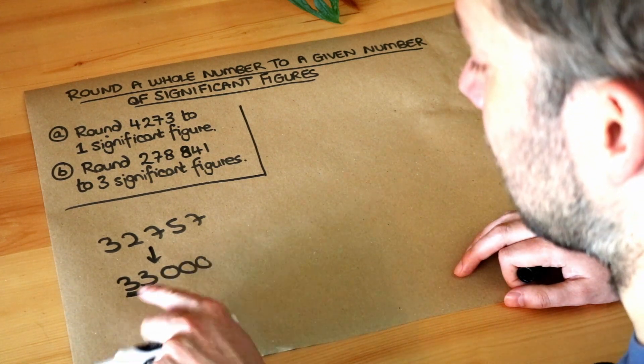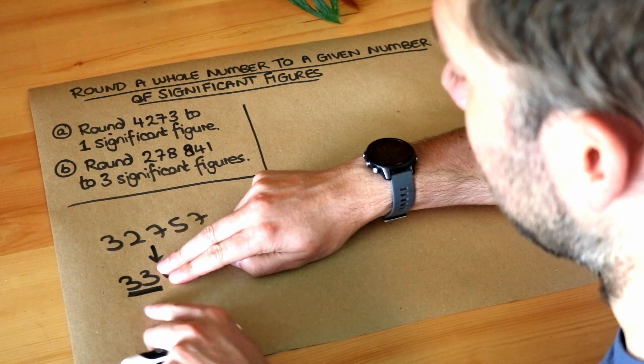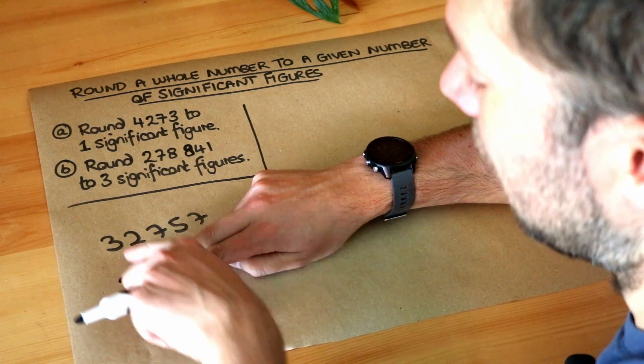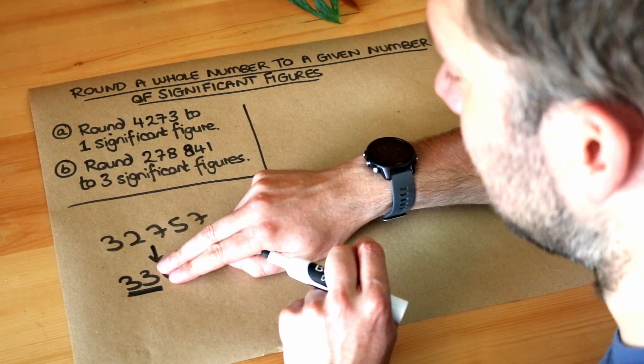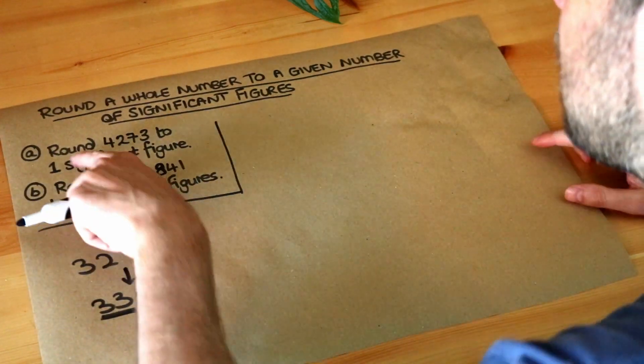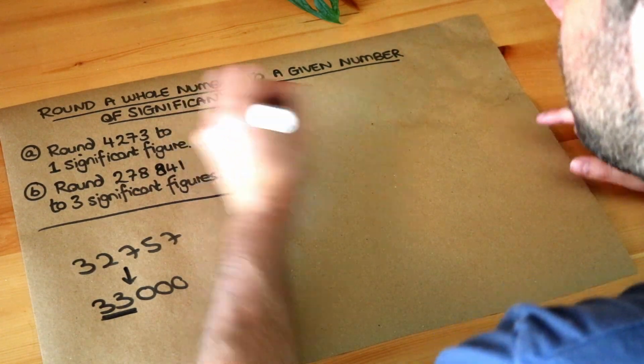The reason we need the zeros is because if we didn't have them we would just have 33, and 33 is clearly nowhere near 32,757 so we haven't rounded the number. So let's do that with these two examples and hopefully it'll become clearer.